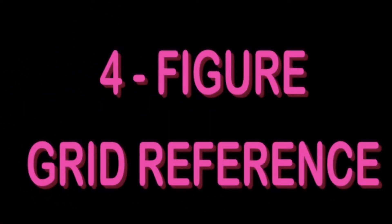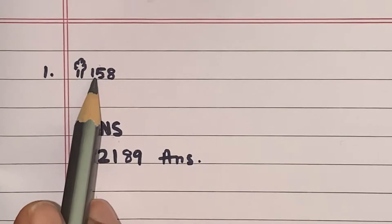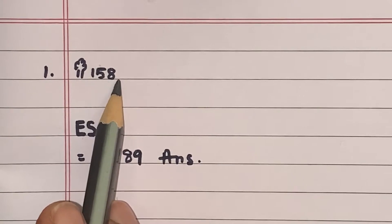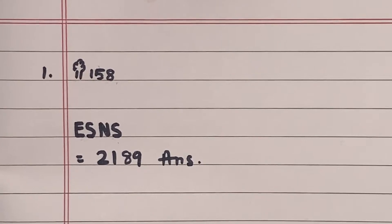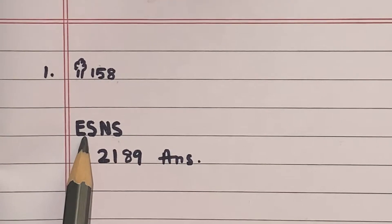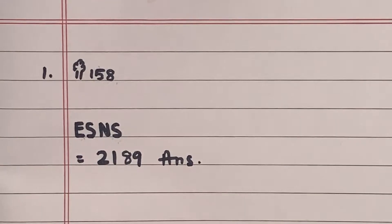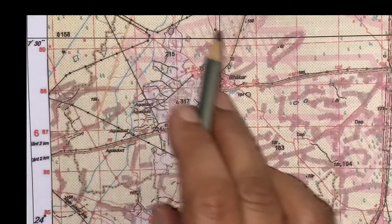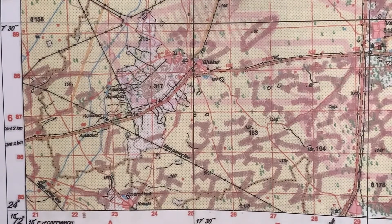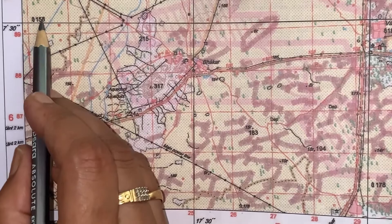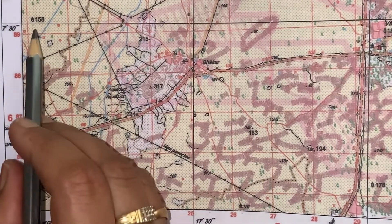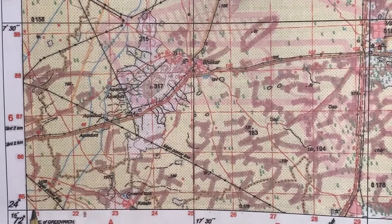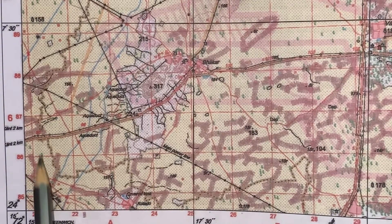Example 1: Give the 4-figure grid reference of the survey 3158. We know that for a 4-figure grid reference we write Eastings first, followed by Northings. This is the map. First we will go to the grid where survey 3158 is drawn. We will see that it falls between Eastings 21 and 22.